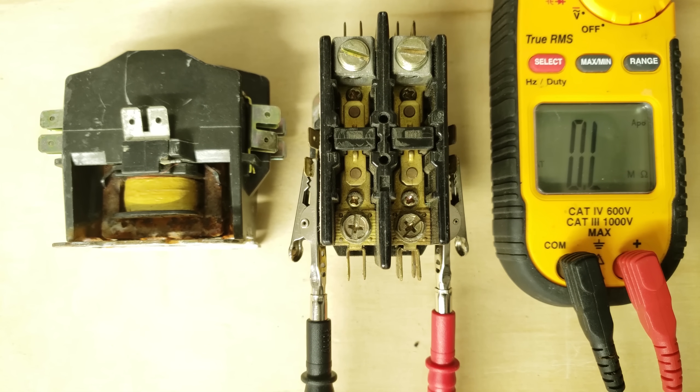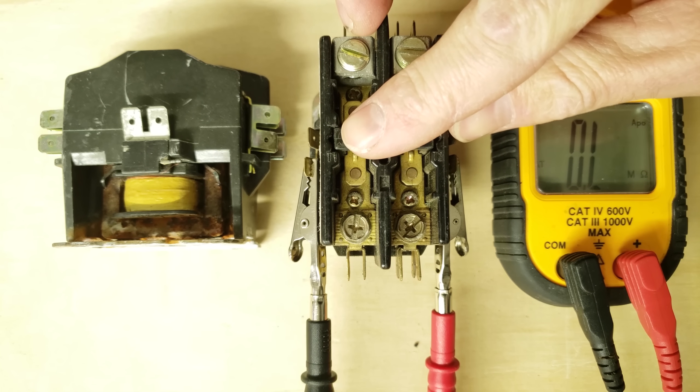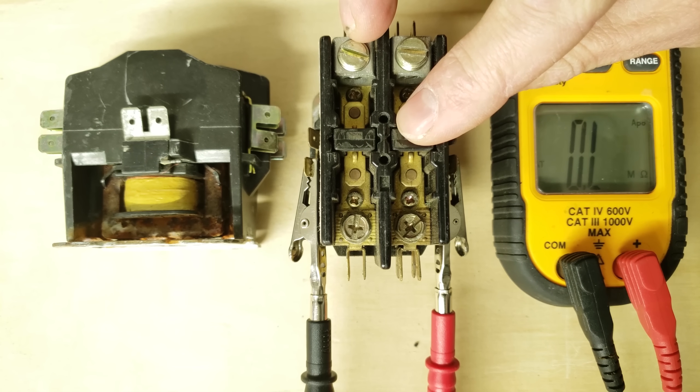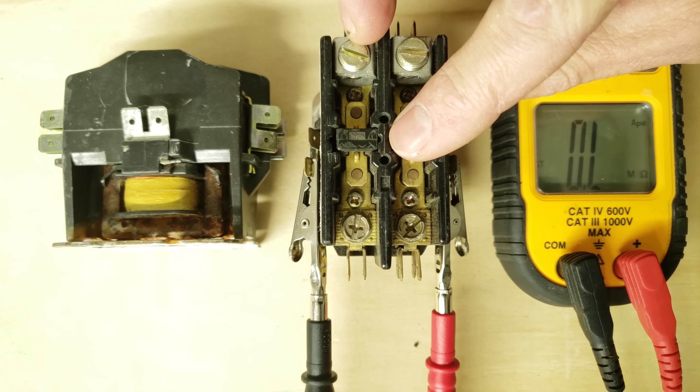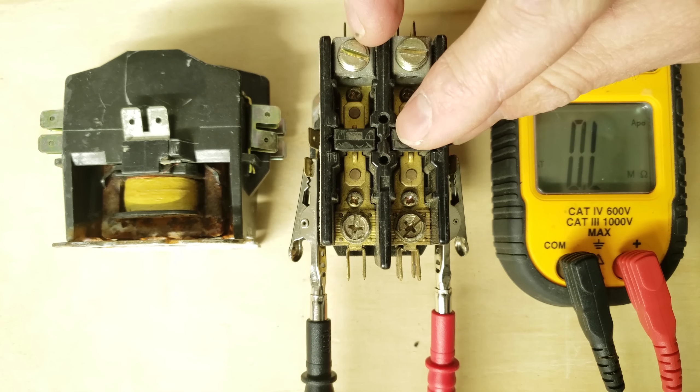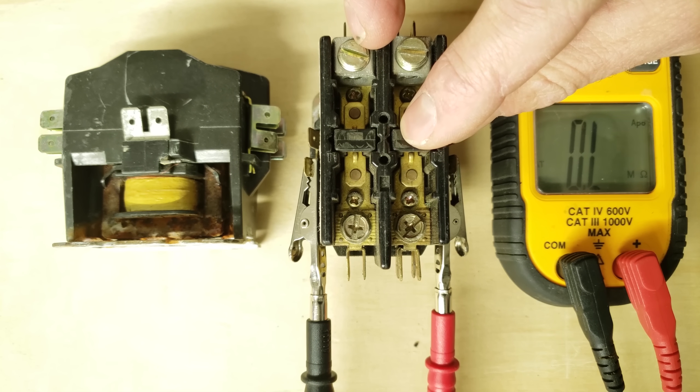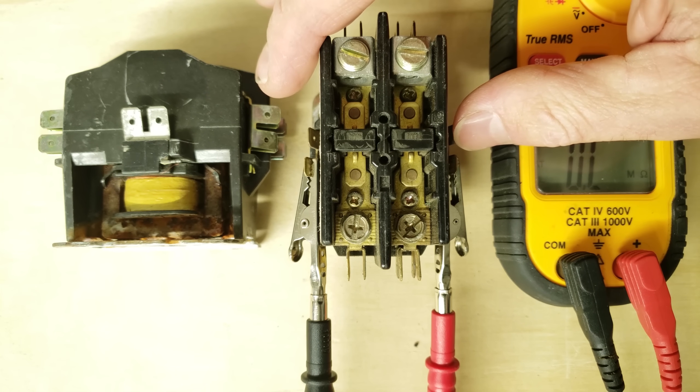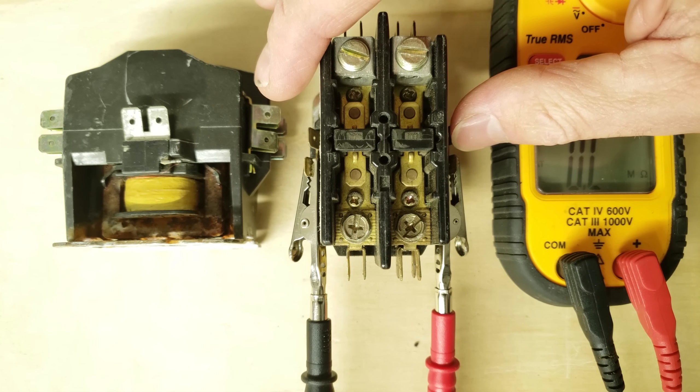You could have high amperage being drawn if these contacts were sucking only partially down. If they were hanging up due to an insect or the plastic is wearing and it's only pulling down part of the way, you're gonna draw a lot more amperage on the coil. The coil is a very small wire and that's gonna end up burning out.